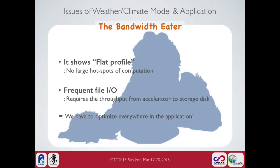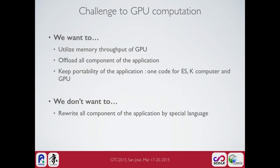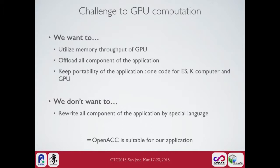We have to change all of the application. Fully GPU simulation of the climate model is challenging. We want to utilize the memory throughput of the GPU and upload all components of the application. If possible, we want to keep portability — using one code for vector machines, scalar machines, and the GPU. We don't want to rewrite all components in a special language because of the huge code portion. So OpenACC is suitable for our application for using the GPU.